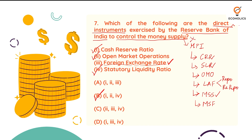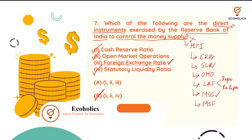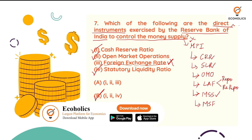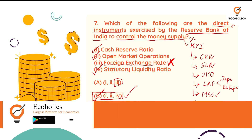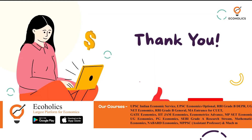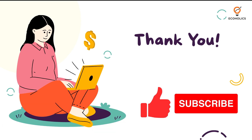Foreign exchange rate does have some connection to the RBI in the context of a managed float or fixed exchange rate regime, but it does not directly control the money supply. So we eliminate option three — wherever option three appears in the combinations, please eliminate it. The remaining answer is B. It's a very easy question. If you understood, please like, share, and subscribe to our YouTube channel. Thank you.